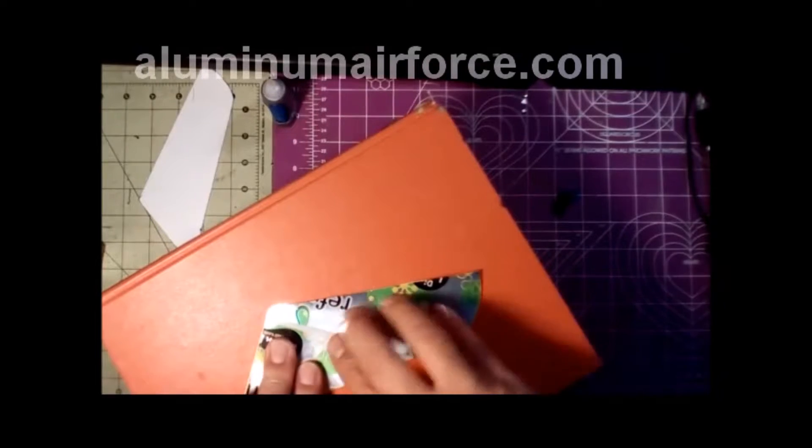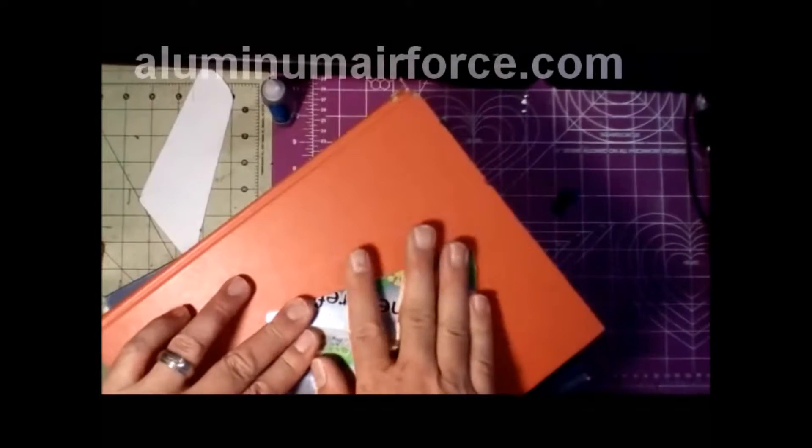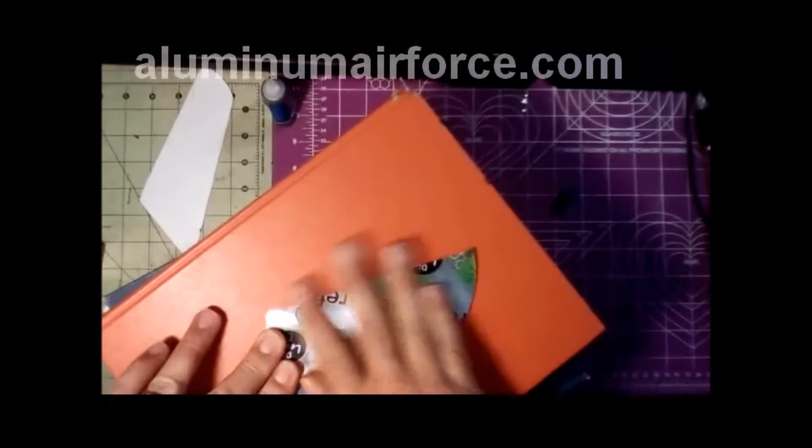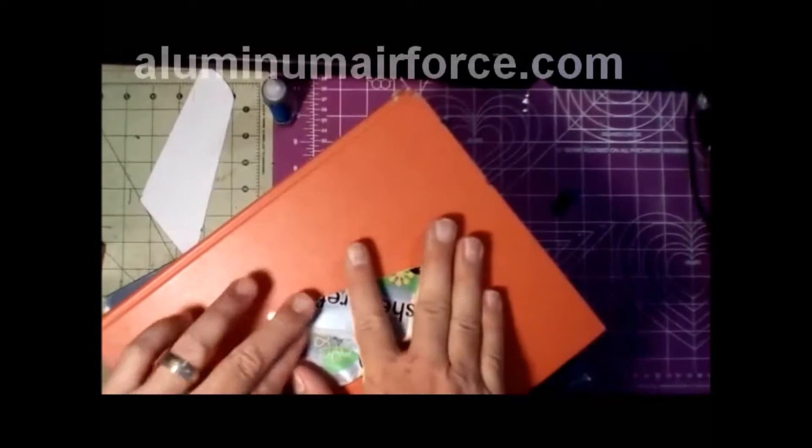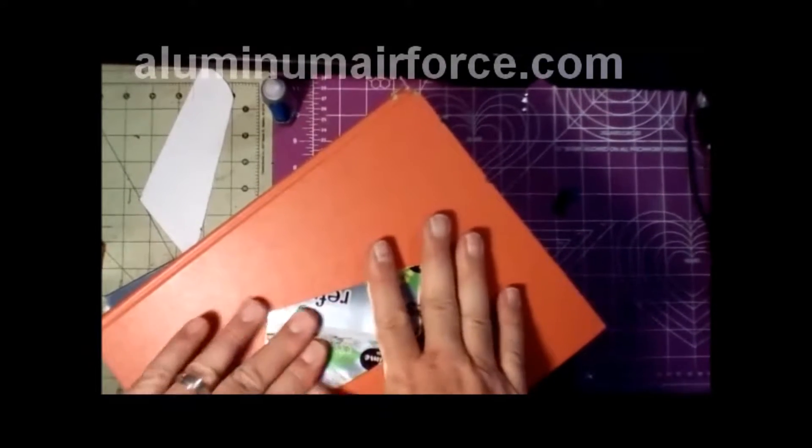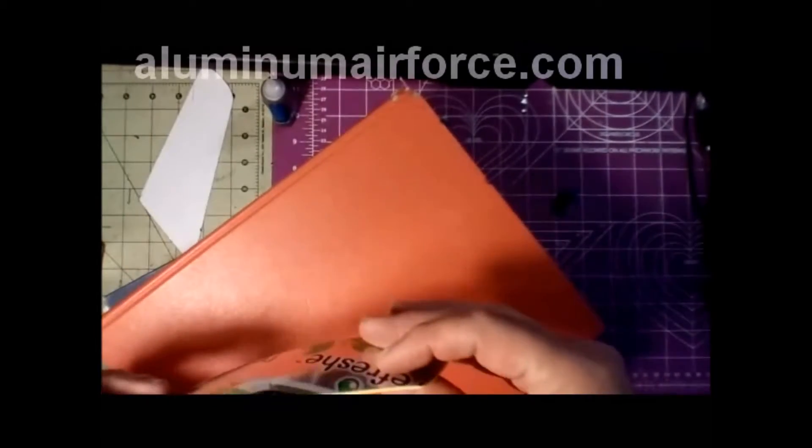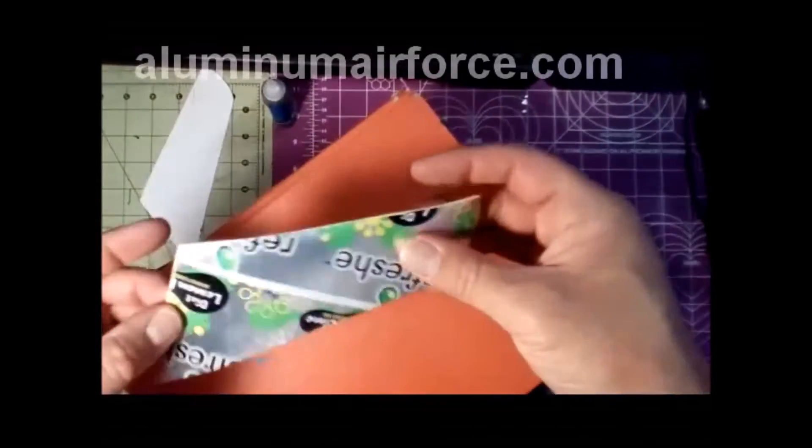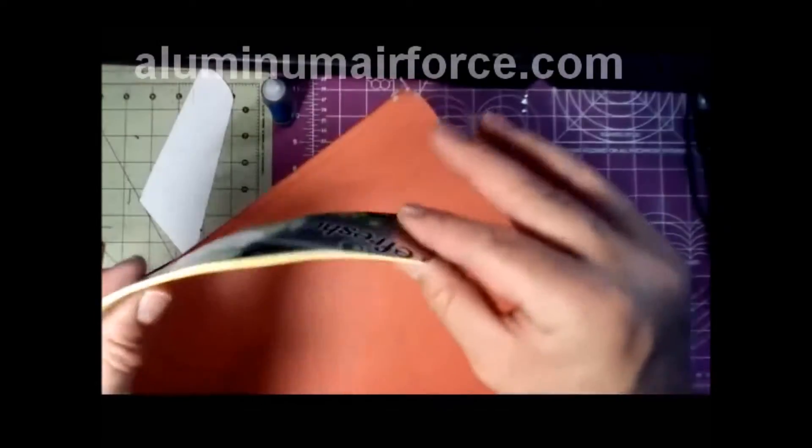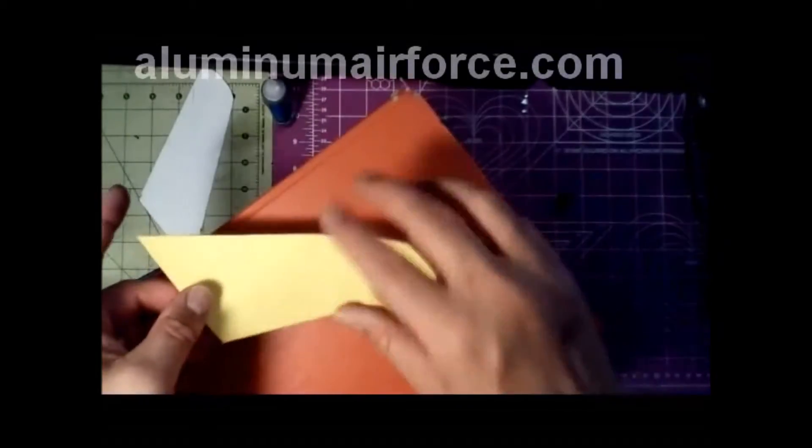We'll press it down, get it nice and flat, get all the bubbles, wrinkles out of our wing. The foam will stick pretty quickly. The wing is a little bent, but we'll take care of that in a second. You can see the depth to our wing, the nice contrast yet bend still. We'll fix that.